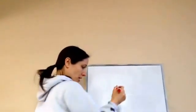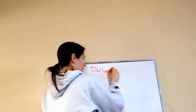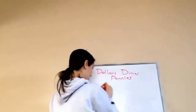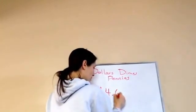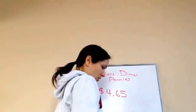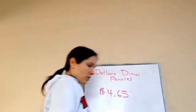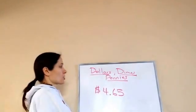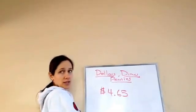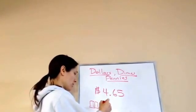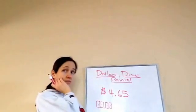Let's do some of the problems that they give us here. What combination of dollars, dimes, and pennies makes $4.65? Using the fewest bills and coins possible. Now, these are the three different types of things you're using. So, how many dollars do I need? Four. So it would be like one, two, three, four. Four one dollar bills, right?